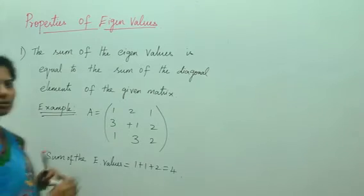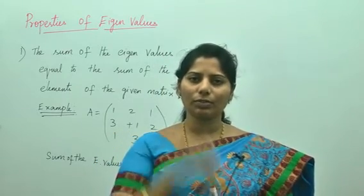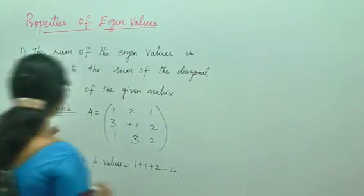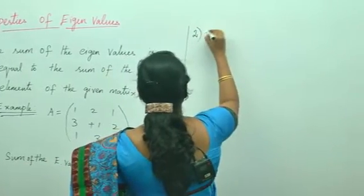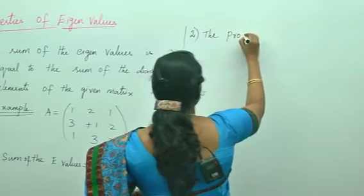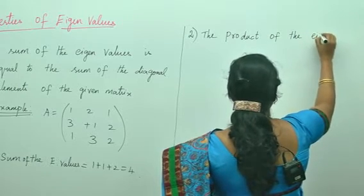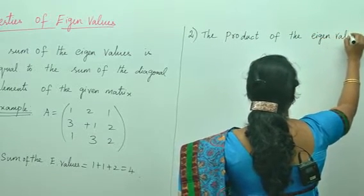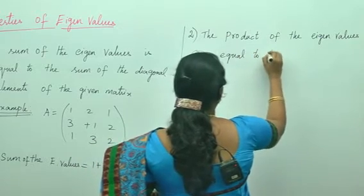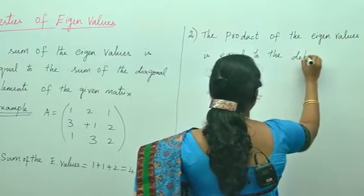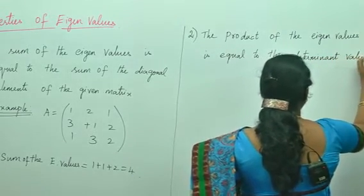This is property number 1. The proof is not necessary — just the statement of the property, which we are going to apply for the problems. Property number 2: the product of the eigenvalues is equal to the determinant value of the matrix A.